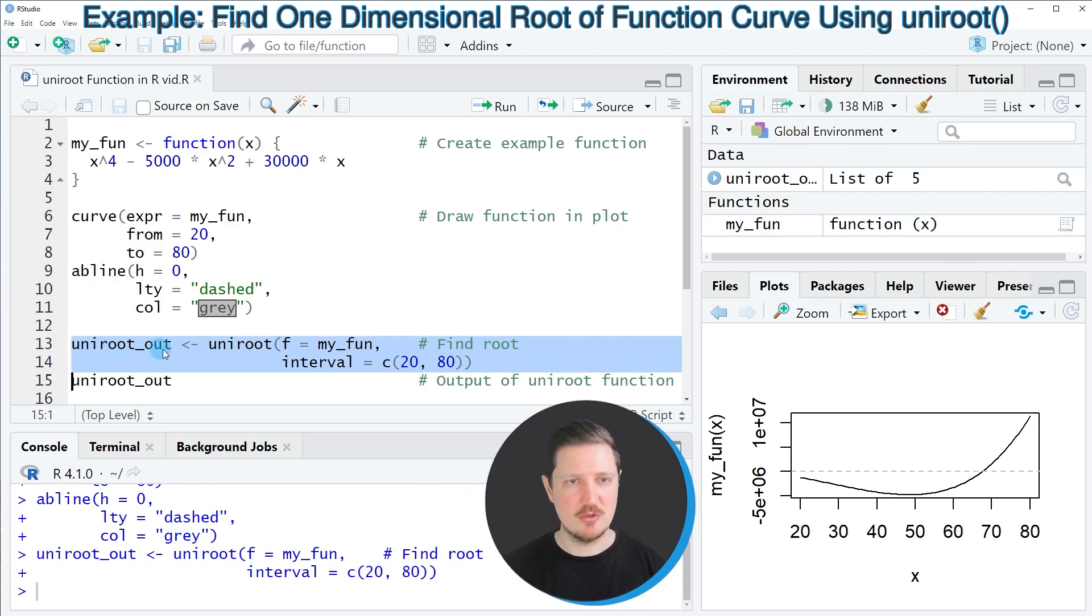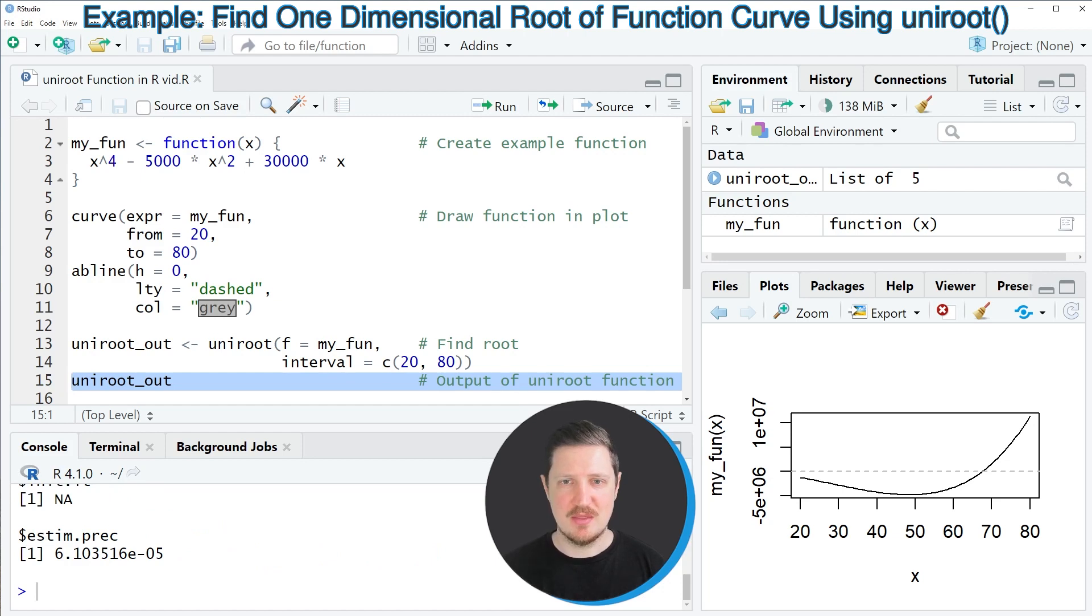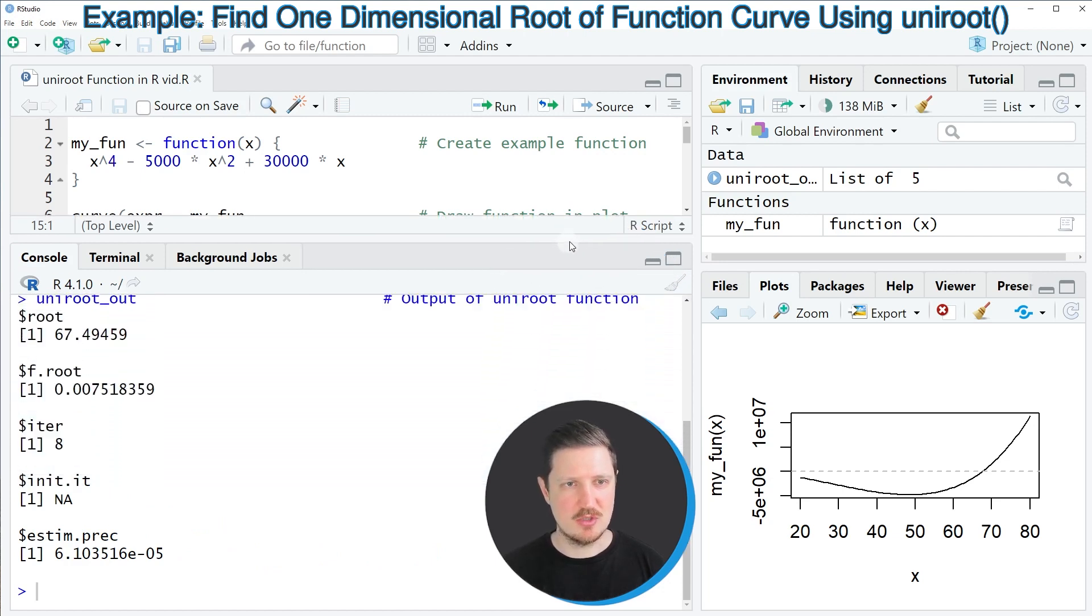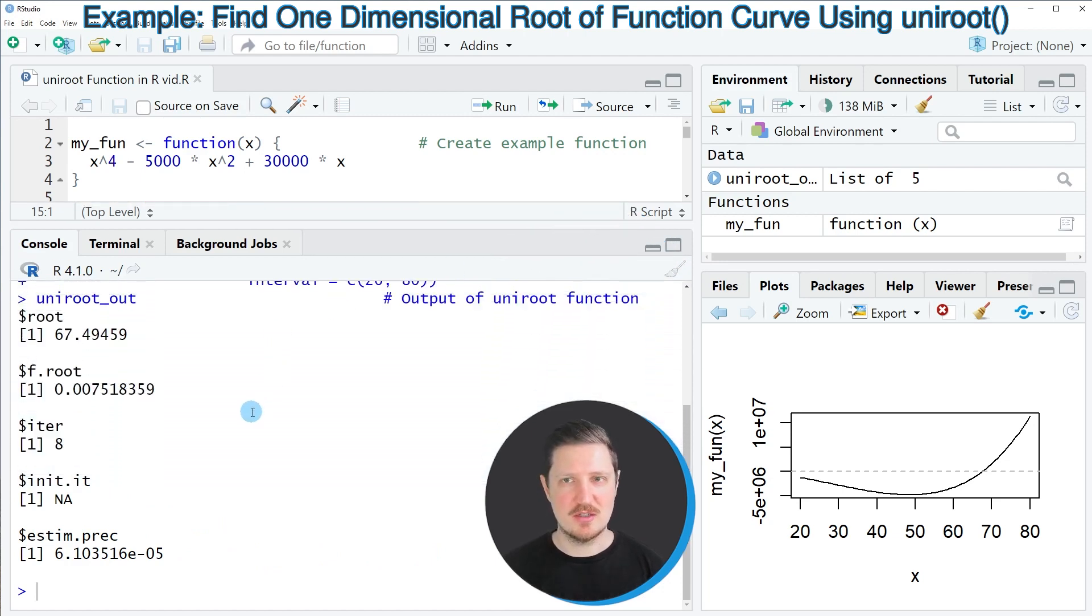We can print the content of this data object by running line 15 of the code. Then you can see at the bottom in the RStudio console that we have created a list object which contains different information about our function curve.